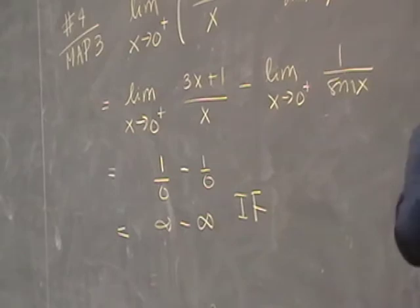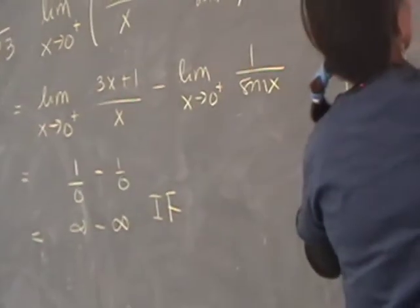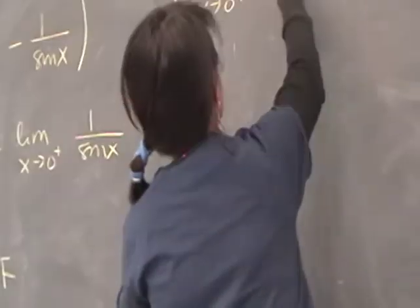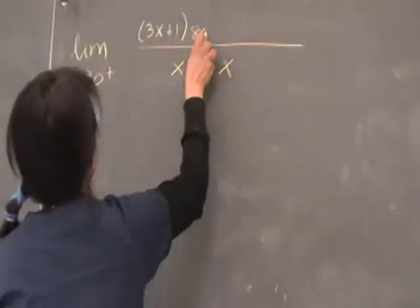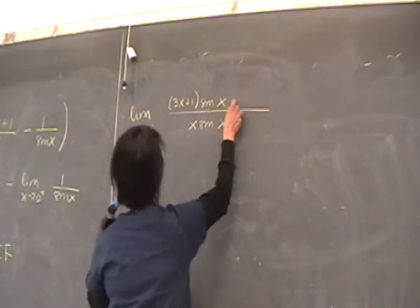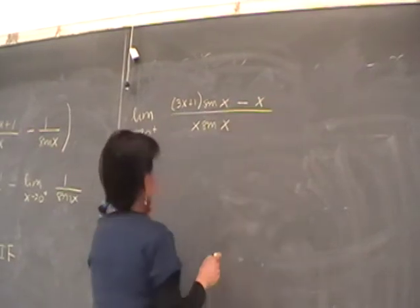LCD being what? X sine x. And this is 3x plus 1. What happens? It gets multiplied by sine x, minus x. Is that good?